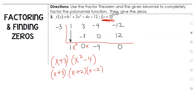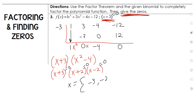So we found our factors. Setting all of these equal to 0 — x plus 3, x plus 2, x minus 2 — your x values will be negative 3, negative 2, and 2. And that's it.